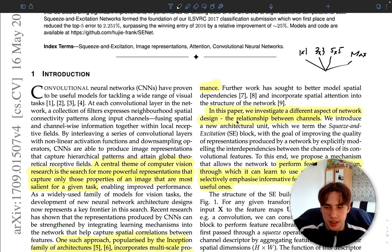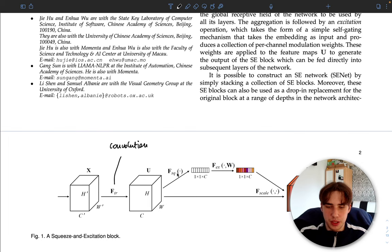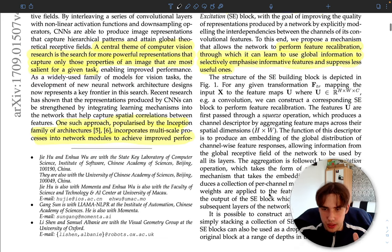That's how it looks like. We've got one operation which is squeezing the feature map into 1x1, which is basically one value. Then we got the excitation which basically selects which channel is important and which isn't. And then later on we get the scale where we multiply the channels by the scale values.